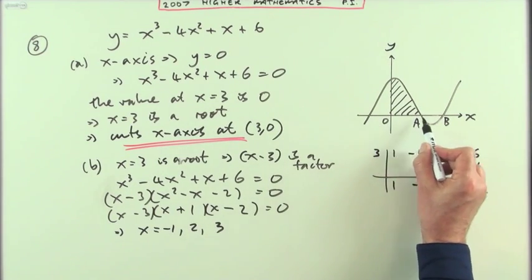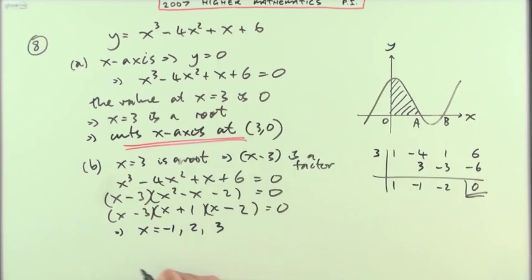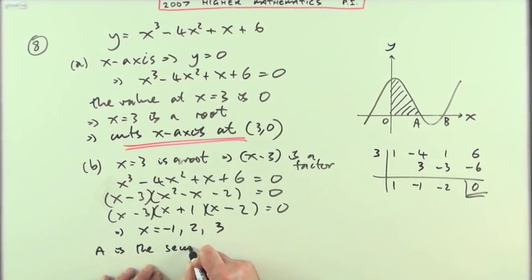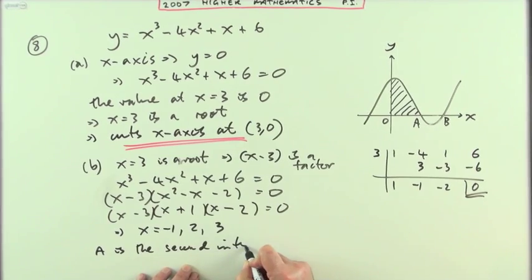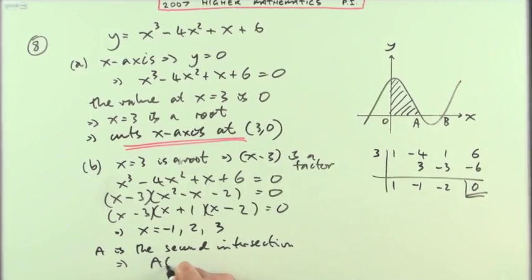From the roots in the diagram, that identifies A as the second intersection, which means A must be the point (2,0).